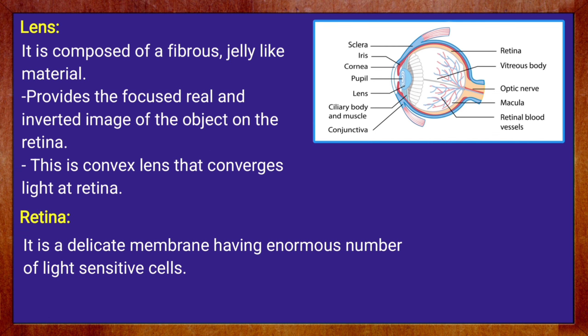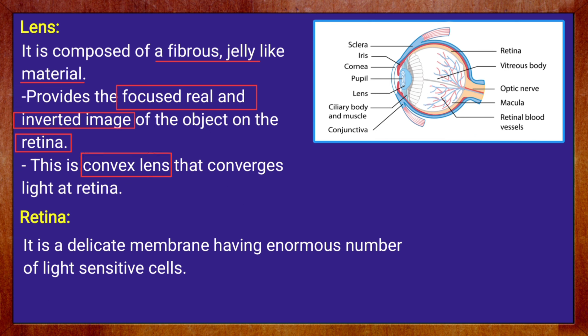A very important part is the eye lens. It is composed of a fibrous jelly-like material, and it provides a focused, real, and inverted image of the object on the retina. This is very important: the eye lens provides a real and inverted image, and this image is formed on the retina. The eye lens is a convex lens, which converges light at the retina.